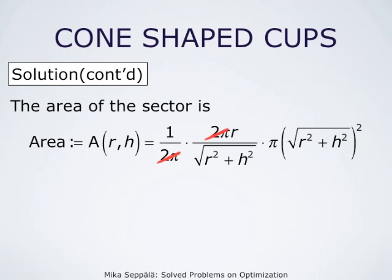The square root of r squared plus h squared also cancels out, and we obtain that the area of the sector is pi times r times square root of r squared plus h squared. Now, this area contains two variables, namely r and h, but we have already computed that h equals 81 divided by pi times r squared.